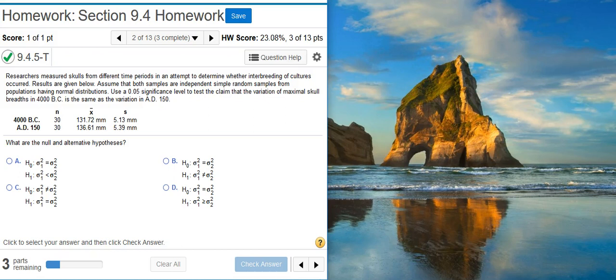Well, the null hypothesis is, by definition, a statement of equality. So we're not going to select answer option C. Of the three answers that remain, we're going to be looking to see what is the alternative hypothesis so that we can select the correct answer. Typically, the alternative hypothesis is going to reflect the claim. What's the claim here?